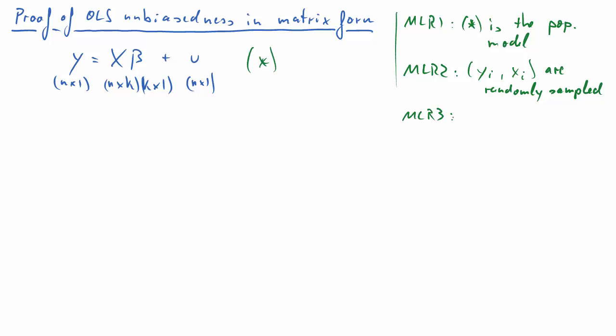The third assumption, as for the simple regression model, assumes that we have variation in all explanatory variables, but the constant I should say. But also that there is no exact linear relationship between any of the explanatory variables.